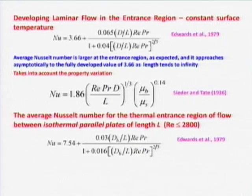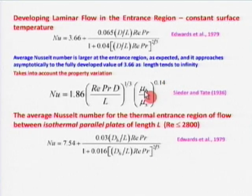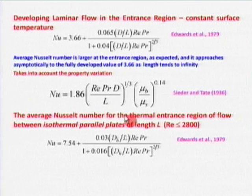For developing flow, there is L/D appearing in the correlation. An important aspect is property variation — bulk temperature changes from inlet to outlet, so properties also vary. This is accounted for by a factor (μ_b/μ_wall)^0.14, where μ_b is the viscosity at (T_inlet + T_outlet)/2. This is not unreasonable, especially for constant heat flux where wall temperature varies linearly.